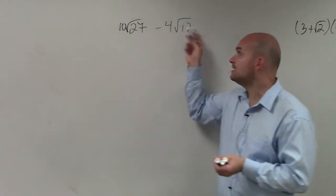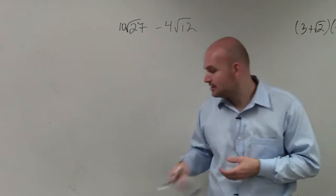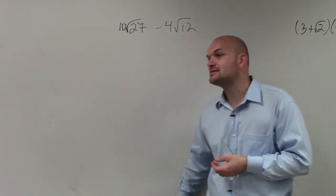So here I have 27, and here I have 12. I cannot add or subtract these. So the first thing I need to do is simplify them.